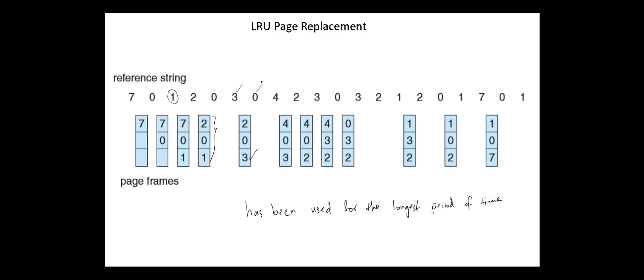Next, zero is there. Next, 4 — and the page that has not been used for the longest period of time among pages 2, 0, and 3 is 2. And we continue in the same manner. The total number of page faults here is 12.